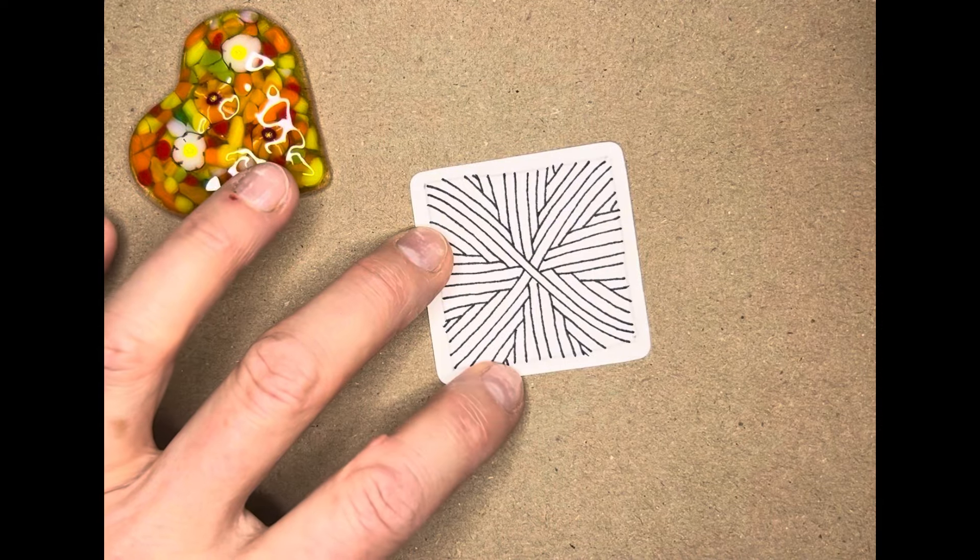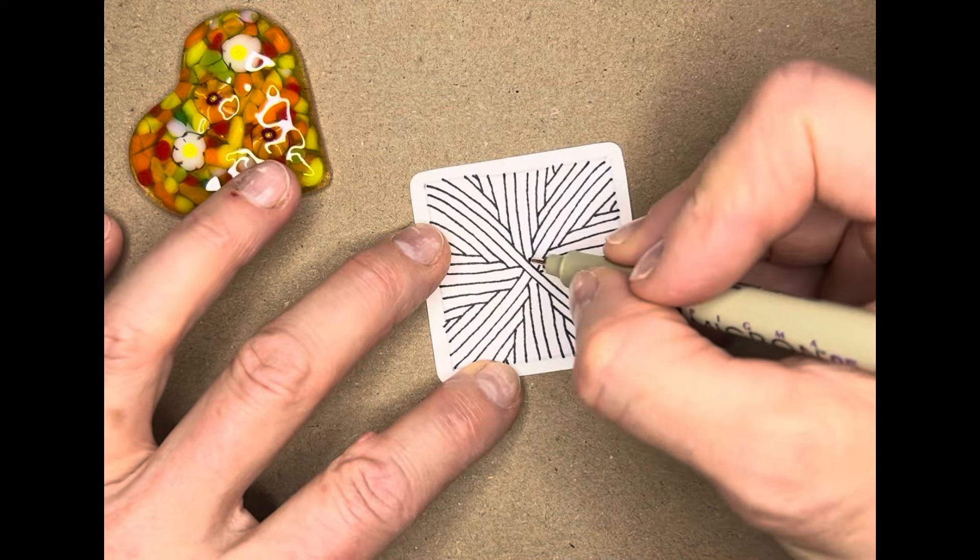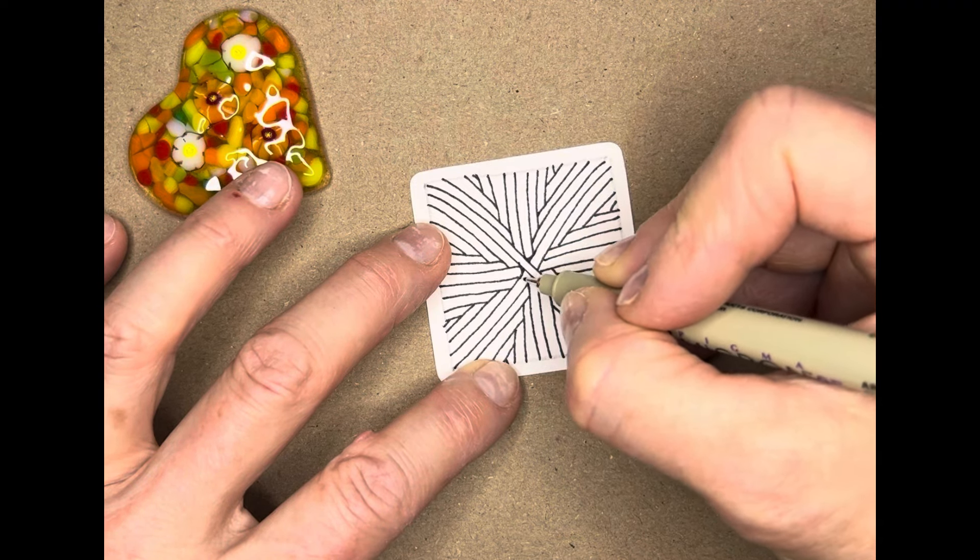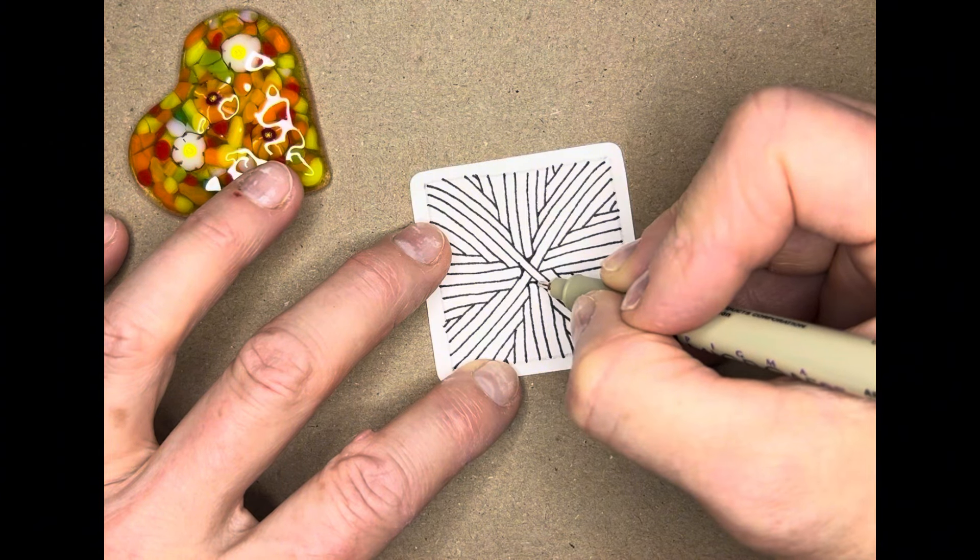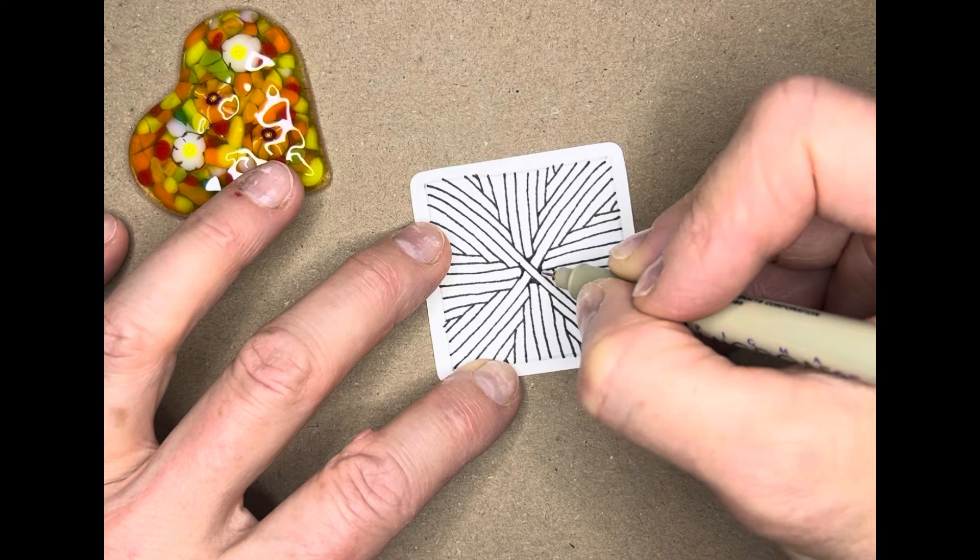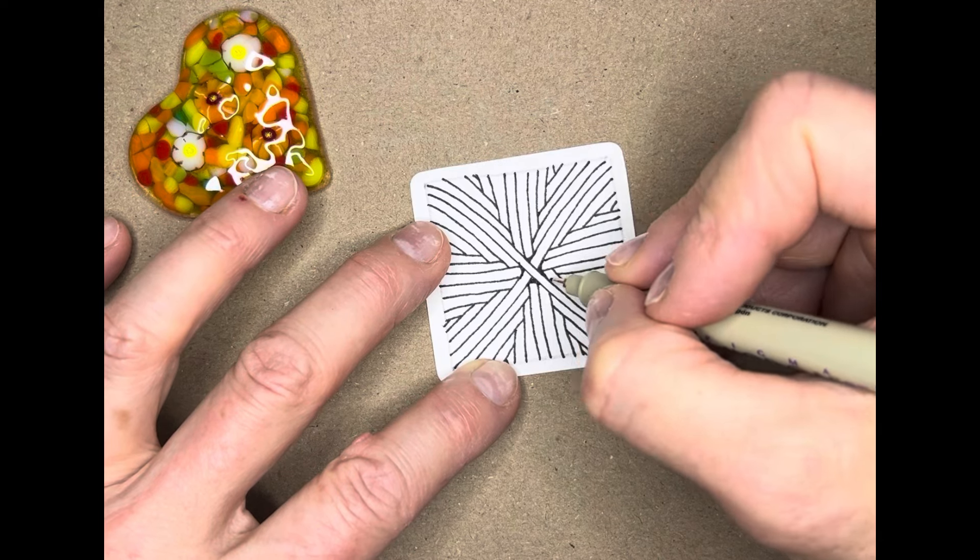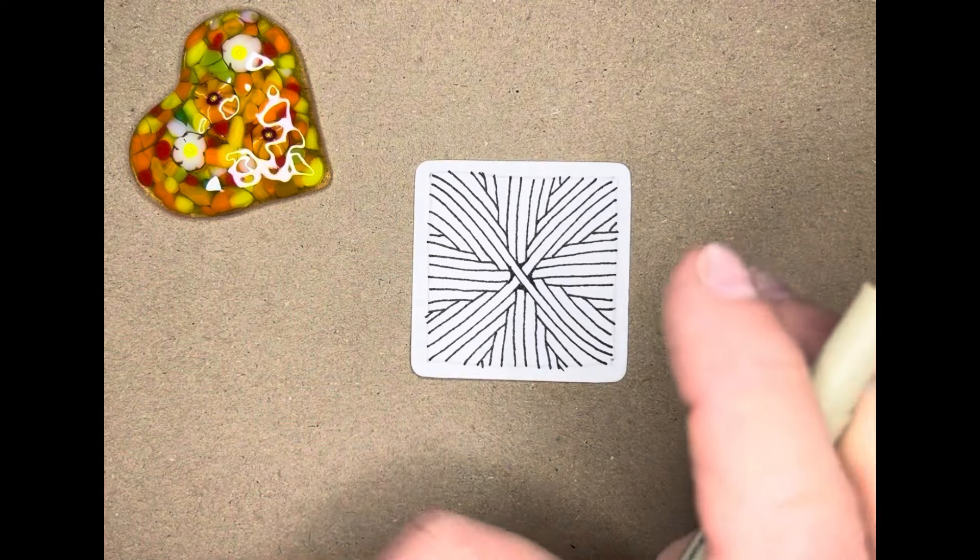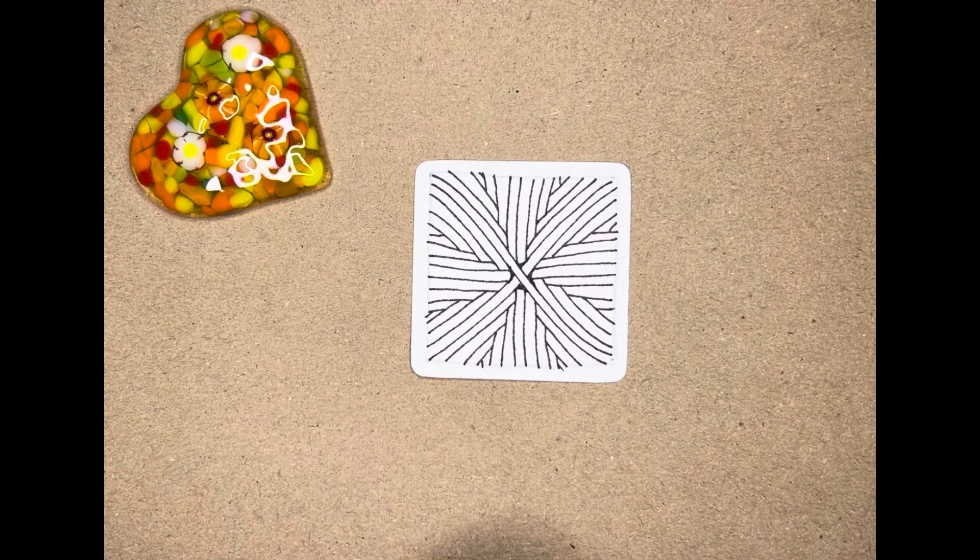I'm just going to add in another little touch. And that is just add a little bit of rounding right in the centre here, just to give it where those first lines crossed over. And that will just give it a little bit of heart, a little bit of strength in the middle.